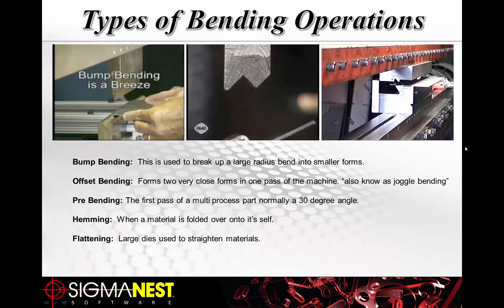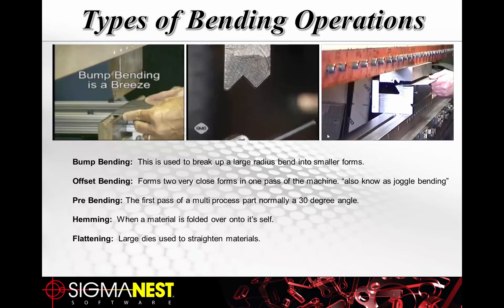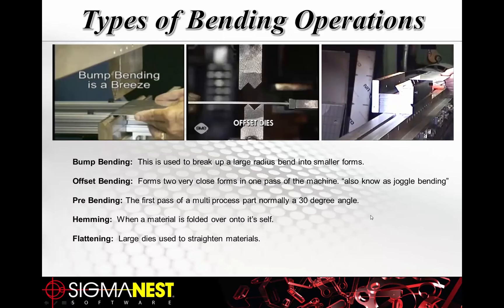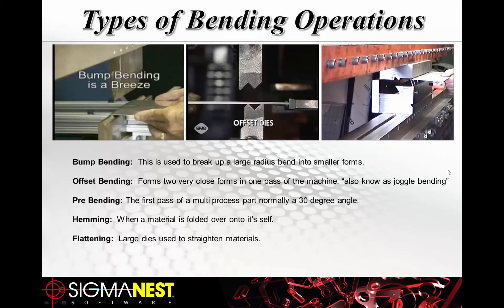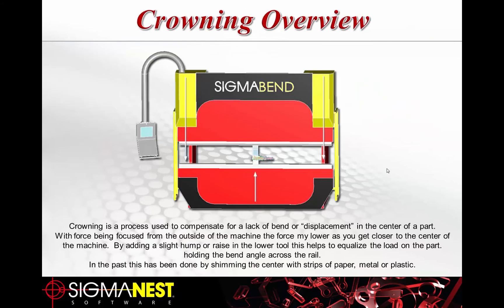Hemming uses a special hemming die with a roller. The first bend rotates the material past 90 degrees, then the operator repositions the part and stamps it closed. Hemming is bending the material over on itself to create a smooth edge. Different types of hems exist — open hems allow interlocking or riveting — but a standard hem is a full close, pushing past the open hem point to close the material fully.